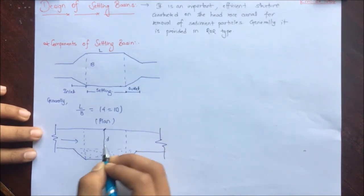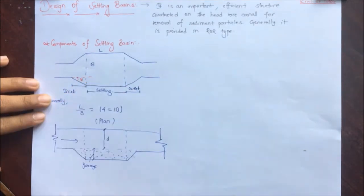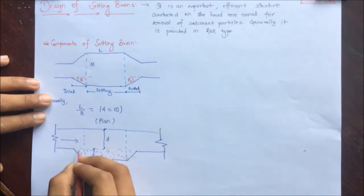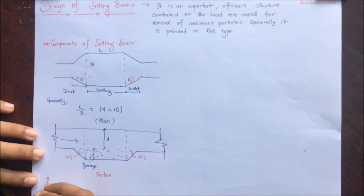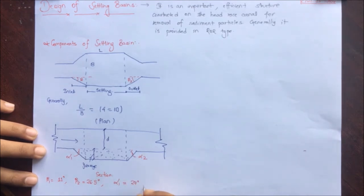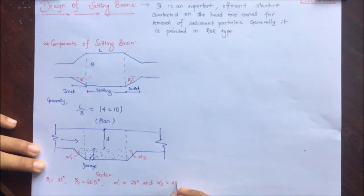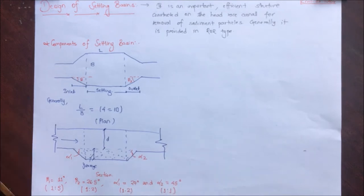In the sectional view, D is the depth and Y is the storage. The angles are represented as beta 1, beta 2, alpha 1, and alpha 2. Beta 1 is taken as 11 degrees, beta 2 as 26.5 degrees, alpha 1 as 27 degrees, and alpha 2 as 45 degrees. On the basis of slope ratio: beta 1 is 1 to 5 (vertical to horizontal), beta 2 is 1 to 2, and alpha 2 is 1 to 1.